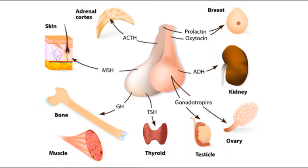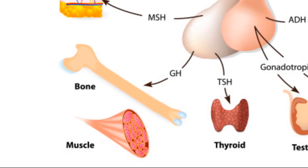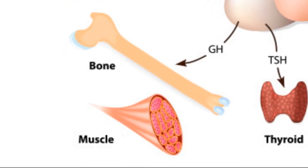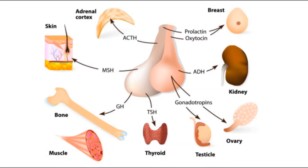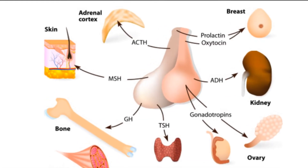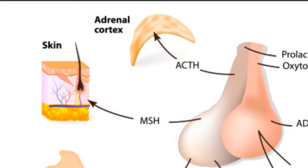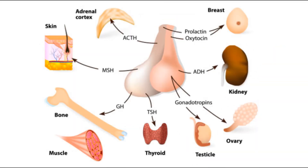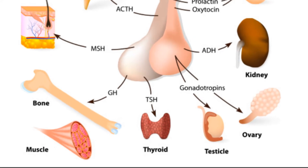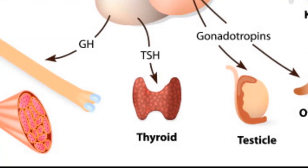Then you have somatotropinoma for the growth hormone, which can result in gigantism and acromegaly. Corticotropinoma for cortisol and the adrenal glands — you can have Cushing's disease or Nelson syndrome. Thyrotropinoma for the thyroid hormone can cause hyperthyroidism.